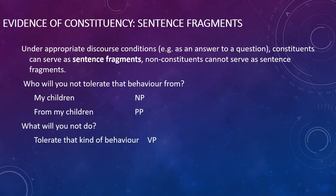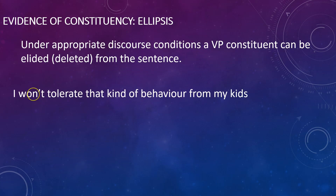Do you remember the verb phrase rule? A verb phrase breaks into a verb and a noun phrase. So we can see that 'tolerate' is the verb, and 'that kind of behavior' must be a noun phrase. Another question: 'What will you not tolerate?' — and the answer could be 'that kind of behavior,' another sentence fragment — in this case a noun phrase. So all these sentence fragments show that the things that are fragments must also be constituents.